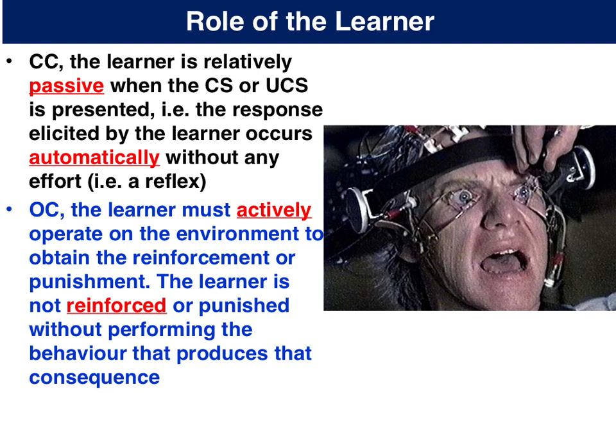In terms of the role of the learner, for classical conditioning it's a passive process — Pavlov's dog salivated at the unconditioned stimulus, the meat, and then through the acquisition stage, after repeated pairings, it reflexively salivated to the sound of the bell in anticipation of food. For operant conditioning it's an active process where the learner responds or operates on the environment based on whether behaviour previously has been reinforced or punished.